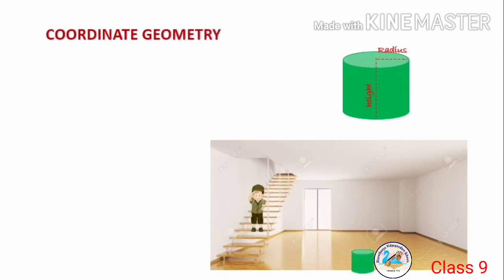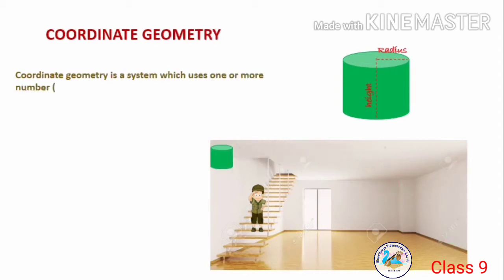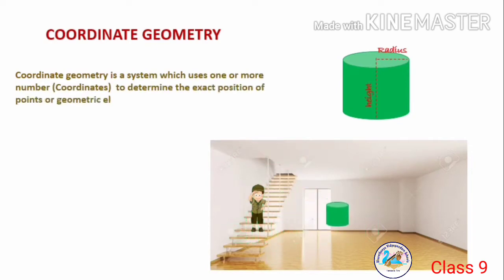So, let us try to define coordinate geometry. Coordinate geometry is a system which uses one or more numbers, that are called coordinates, to determine the exact position of points or geometric elements.